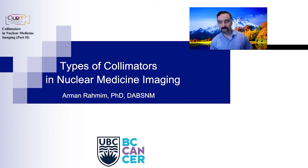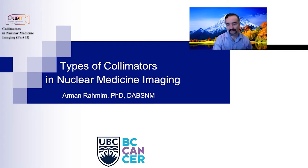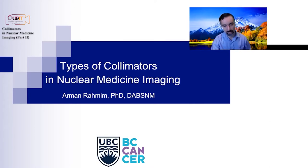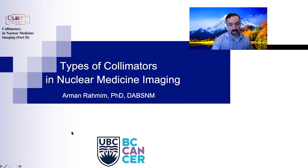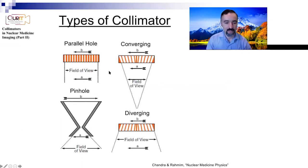We're going to wrap up the discussion we had from last time on the gamma, or scintillator, or Anger camera, and we're going to especially focus on the different kinds of collimators that are used in nuclear medicine imaging. We already mentioned that there are different kinds of collimators out there, and we especially focused on parallel hole collimators.